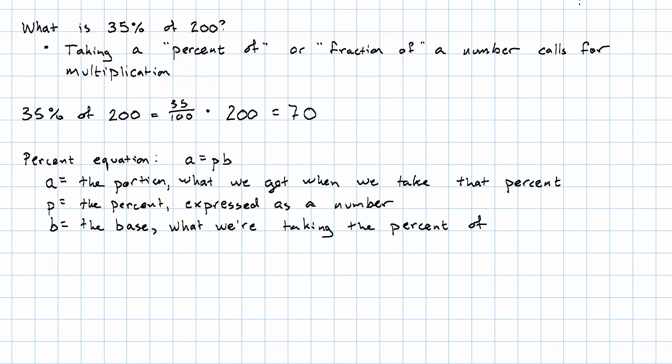So in the example that we saw above, 35% of 200 is 70. The result is 70. The percent is 35 hundredths, or if you prefer decimals, 0.35. And the base is 200. So when we said that 35% of 200 is 70, that's because in the percent equation, 70 is 35% times 200.